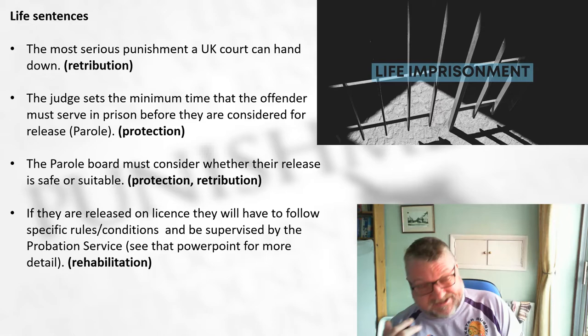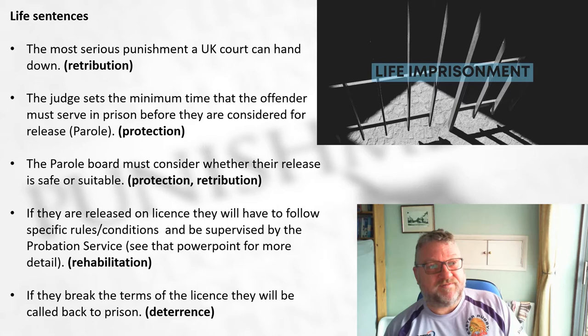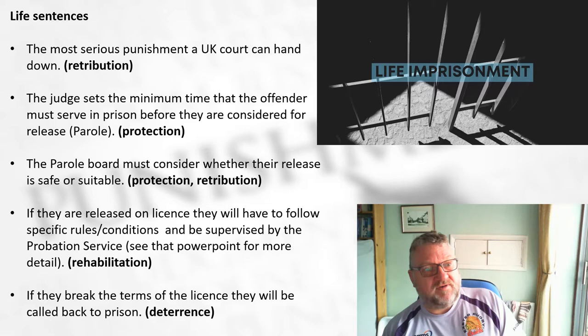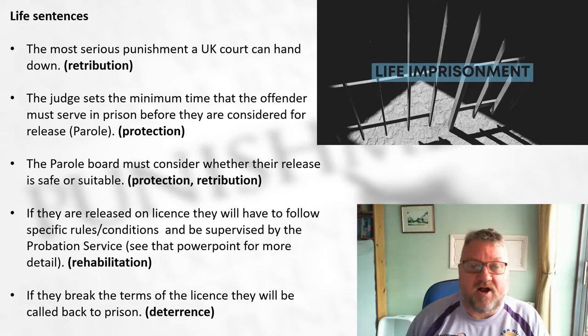If they break the terms of their licence, they are recalled to prison - providing deterrence. So with life sentences, we actually have four of the five aims present: retribution, protection, rehabilitation, and deterrence. Reparation is not so much present, but the other four are clearly there.